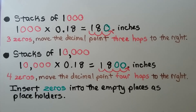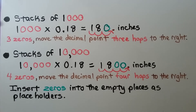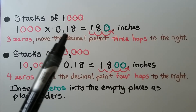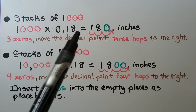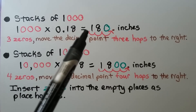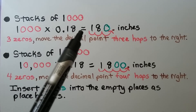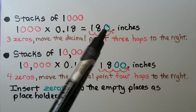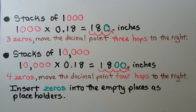If we put the cookies into stacks of 1,000, we have 1,000 times 18 hundredths. We have three zeros, so we're going to move the decimal point three hops to the right. But I only see two hops that we can do here. When we go to make our third hop, we hop under an empty space and put a zero there as a placeholder. It would be 180 inches.